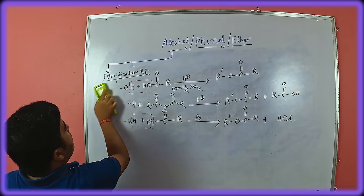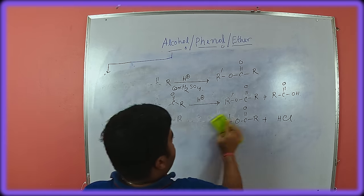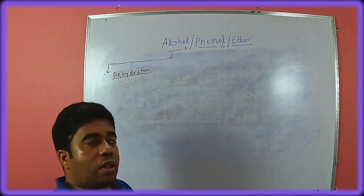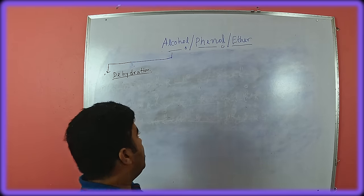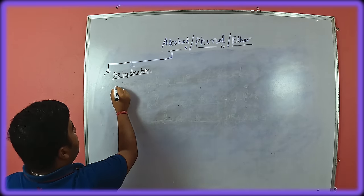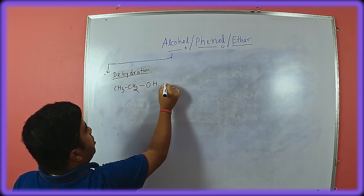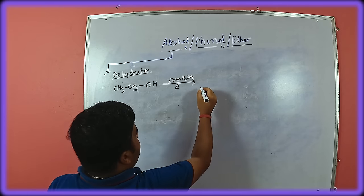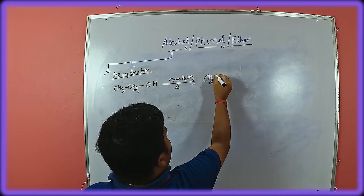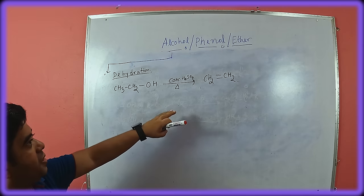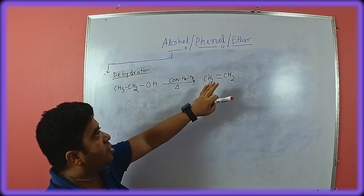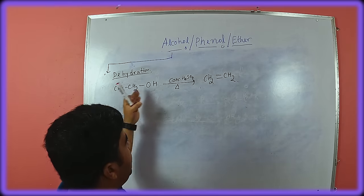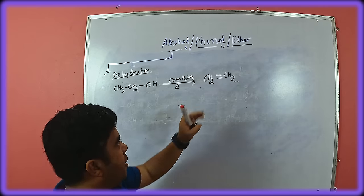Next is dehydration. What we have seen in alkene — that alkene is hydrated to form alcohol — just the opposite reaction is dehydration. Ethanol in presence of concentrated sulfuric acid and heat gives formation of alkene. This is the reverse reaction of hydration of alkene: if we add water to alkene it gives alcohol, and if we dehydrate that alcohol it gives alkene.